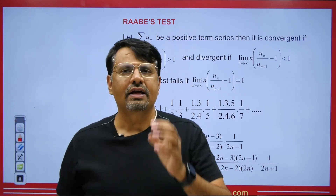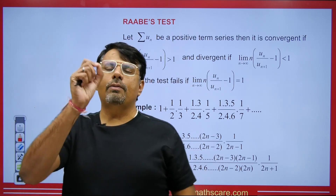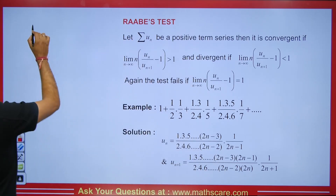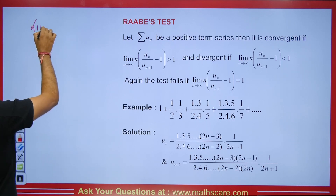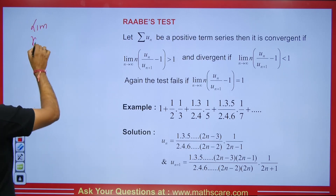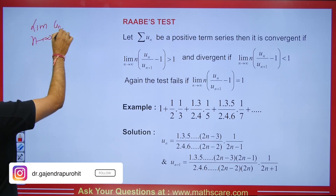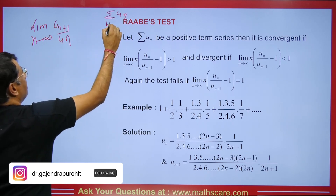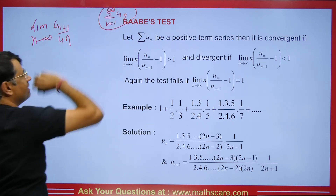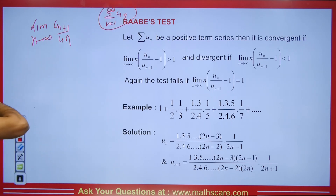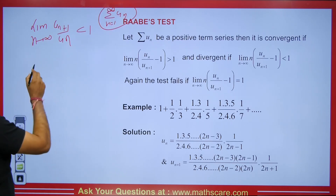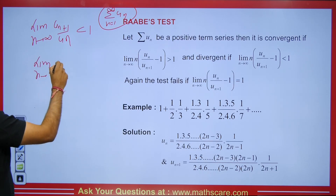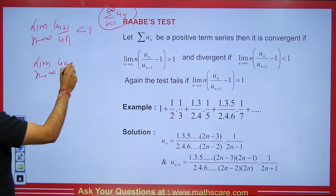And if it is equal to 1, then the test will fail. A question might arise: when do we apply this test? If you have studied the D'Alembert Ratio Test, it says that given an infinite series, we compute the limit as n tends to infinity of u_{n+1} / u_n. If its value is less than 1, it converges; if greater than 1, it diverges.